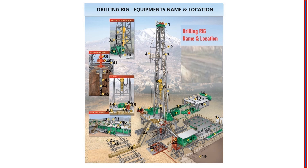Number 17 is the bulk mud compartment tank. Number 18 is the mud tank, also called the mud pit — the green one shown in the image.